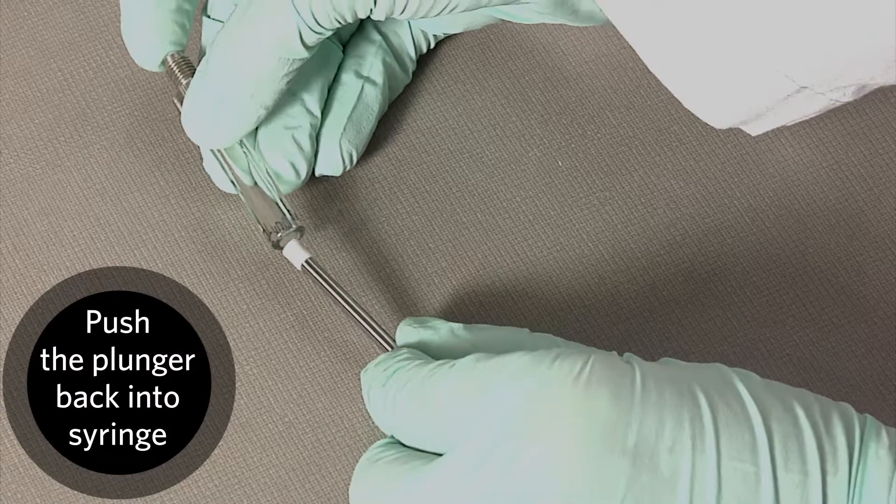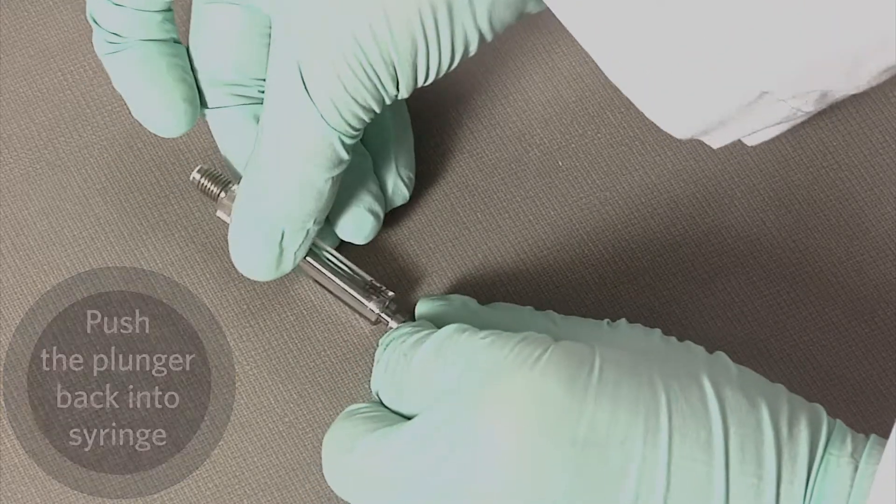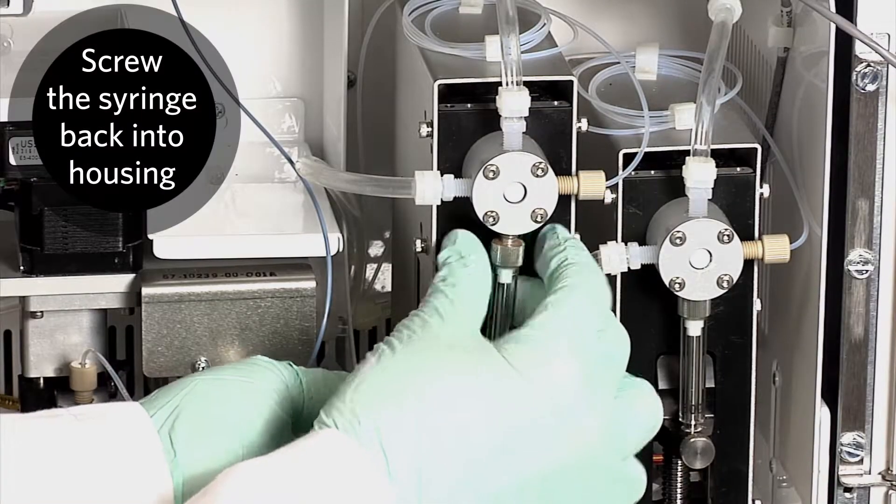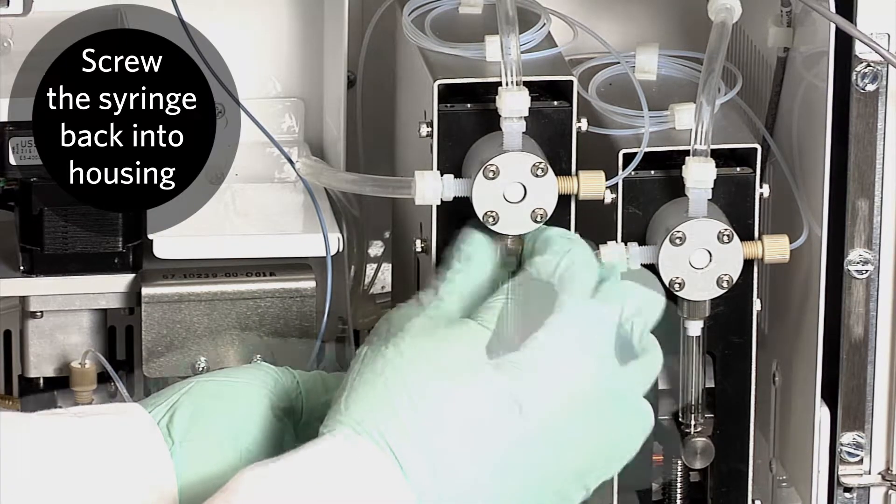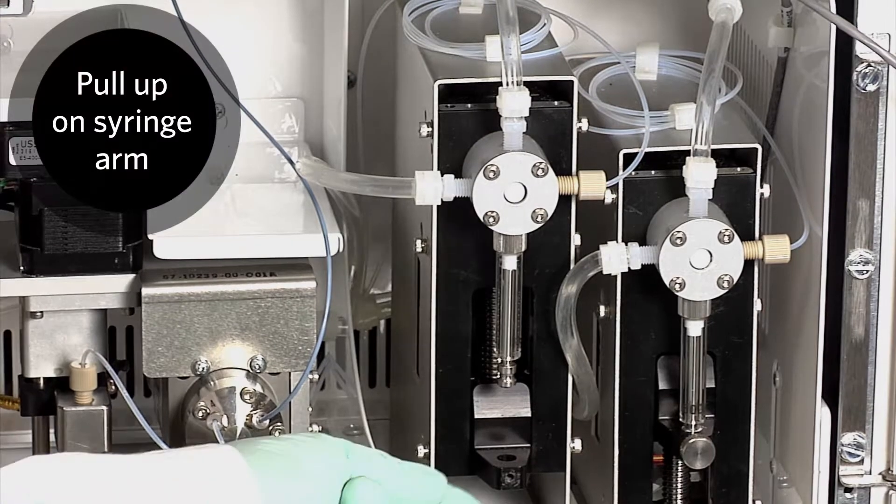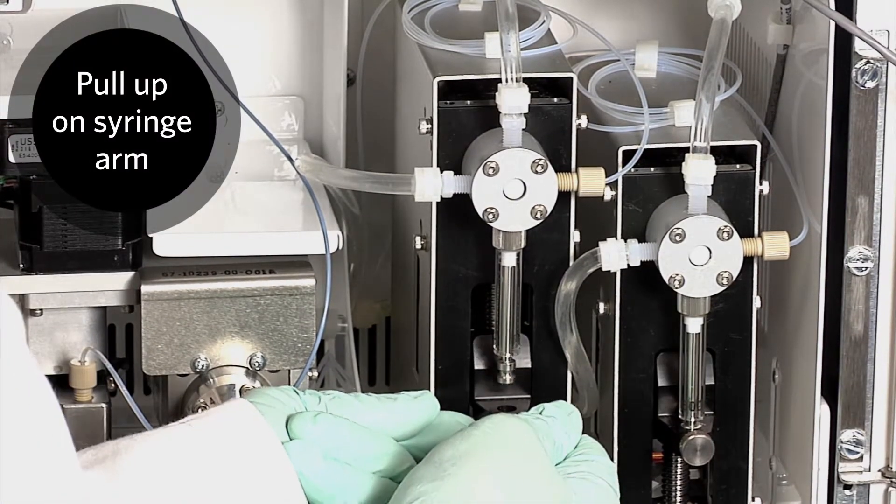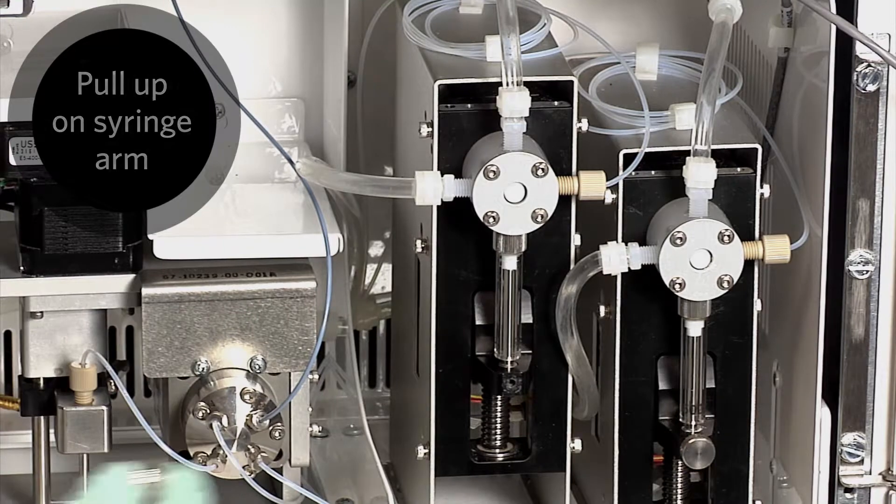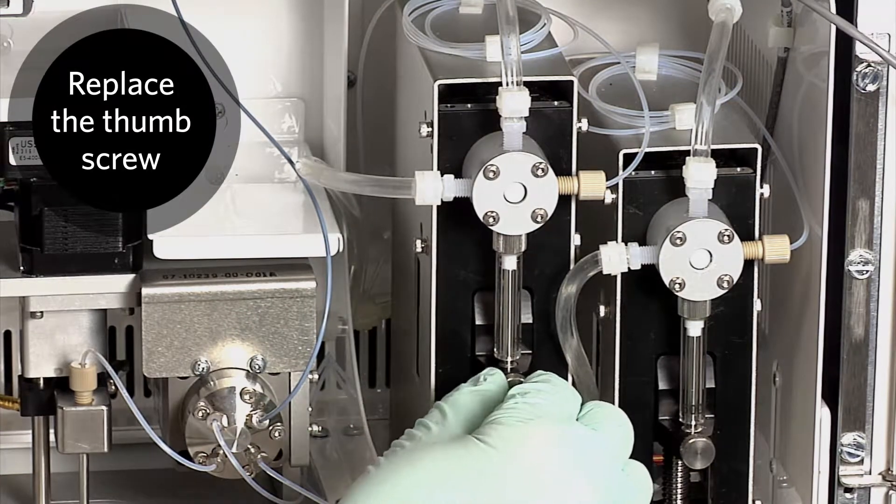Push the plunger back into the syringe. Screw the syringe into the top of its housing. Pull up on the syringe arm, allowing the bottom of the syringe to slide into the hole on the top of the arm. Replace the thumb screw on the syringe arm.